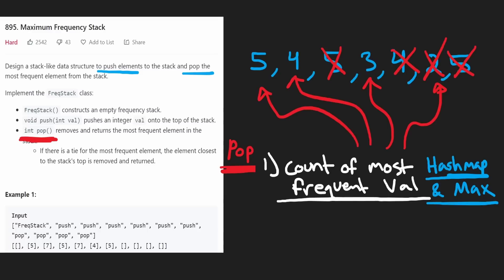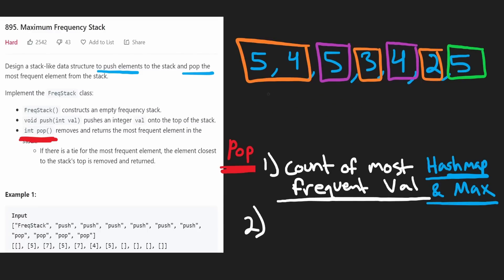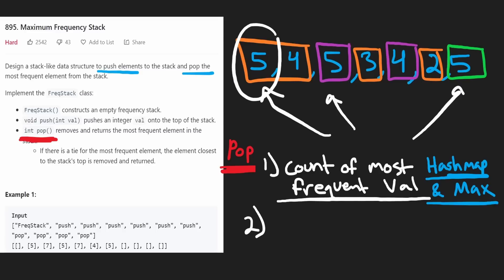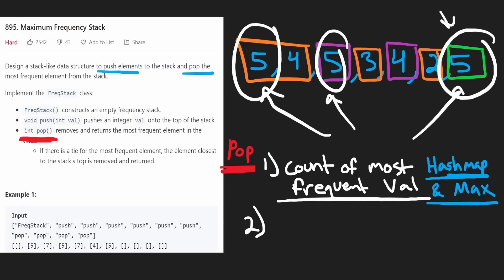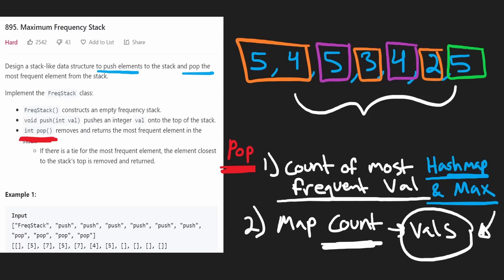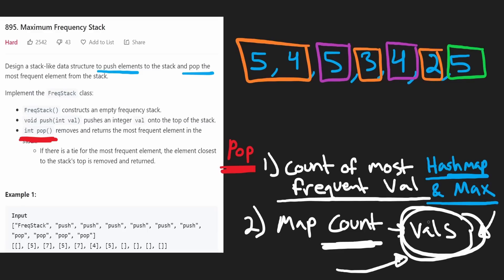Are you seeing the pattern? It would be really nice if we could separate values based on the counts of those values — all values with a count of three, all values with a count of two, all values with a count of one, separated out. We're doing it in a creative way: five occurs three times, but I've separated one five in a group of ones, one five in a group of twos, one five in a group of threes. We map the count of a value to the group of values with that count. A list is best since we want to preserve order.